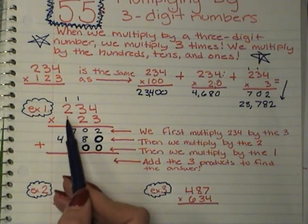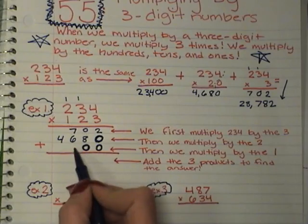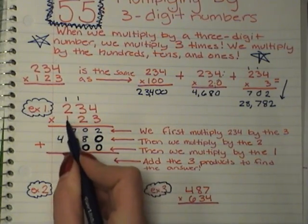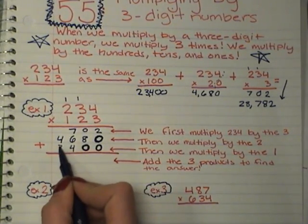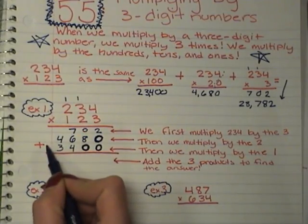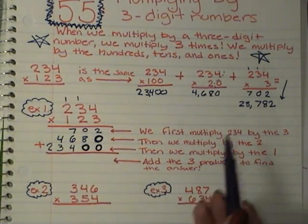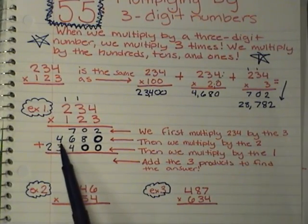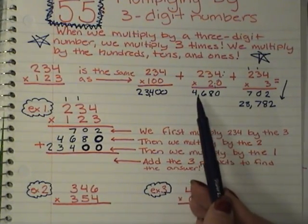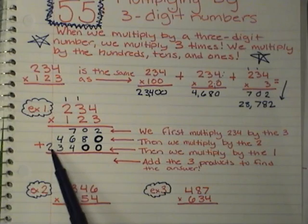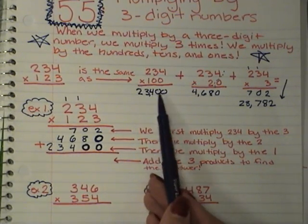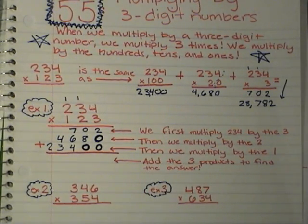Alright, now I'm going to take my 1 all the way over to my 4. 1 times 4 is 4, 1 times 3 is 3, 1 times 2 is 2. Take a second. Look at 7, 0, 2. 7, 0, 2. 4,680. 4,680. 23,400. 23,400. You're doing 3 multiplication problems all in 1.